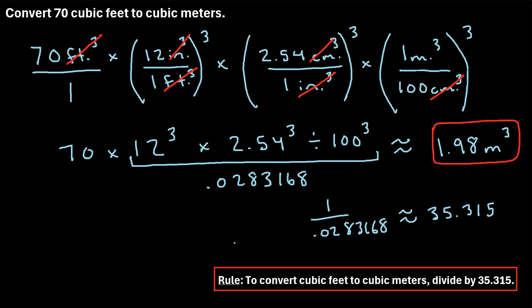So let's write that. So if you'd like, one rule that you can remember is to convert cubic feet to cubic meters, just divide by 35.315. So for example,